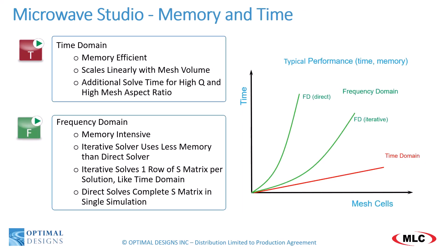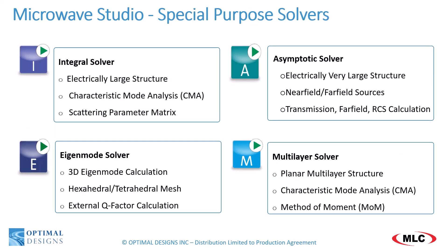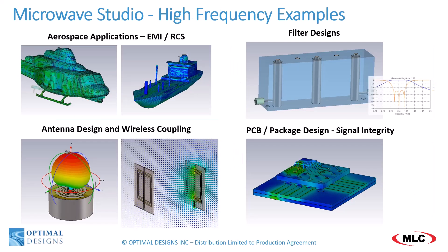This graph shows the relation of electrical volume and mesh size for typical solve time in time domain and frequency domain. The big takeaway is time domain is more efficient with memory usage and time. The other four solvers in the high-frequency suite are special-purpose solvers. The integral and asymptotic solvers are for electrically very large structures. The eigenmode solver is used for studying 3D resonance structures. The multilayer solver is a planar MOM solver efficient for PCB simulations. Technology examples for high-frequency include EMI shielding, radar cross-section, cavity filters, antenna design, wireless coupling, and PCB signal integrity analysis.